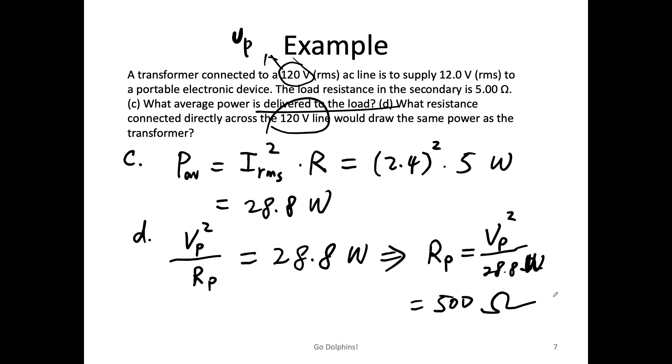So if I connect 500 Ω directly to the 120 volt supply, it will give me the same power as if I connect 5 Ω to the 12 volt secondary coil.